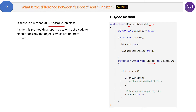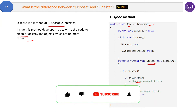Inside the method, the developer has to write the code to clean or destroy objects which are no more required. It sounds similar to garbage collection, but the difference is garbage collection runs automatically. To run the dispose method, you have to write the code explicitly — like writing the dispose method and making objects null.